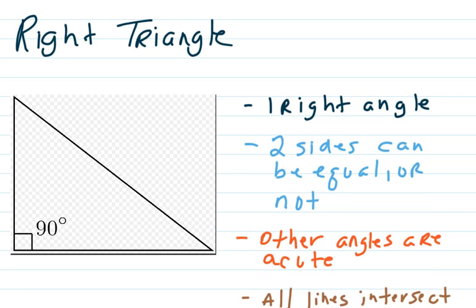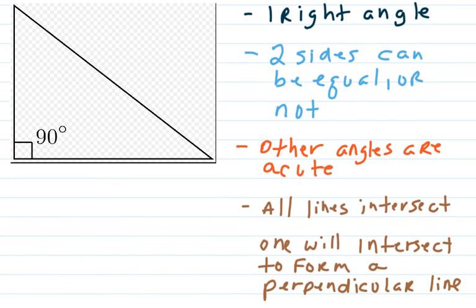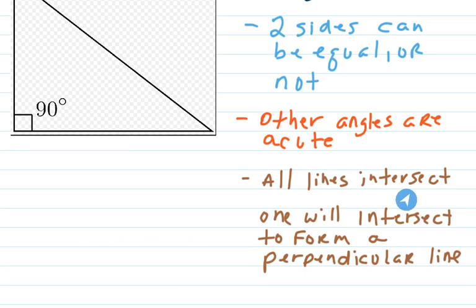Two sides can be equal or not equal. The other angles are acute. And all the lines intersect. One of the lines will intersect to form a perpendicular line.